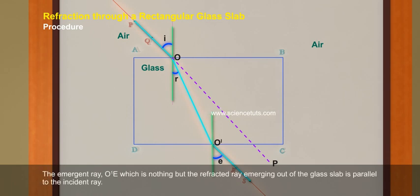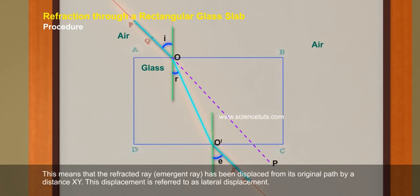The emergent ray, O-E, which is nothing but the refracted ray emerging out of the glass slab, is parallel to the incident ray. This means that the emergent ray has been displaced from its original path by distance XY. This displacement is referred to as a lateral displacement.